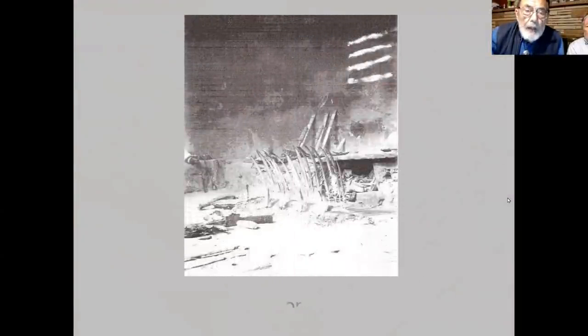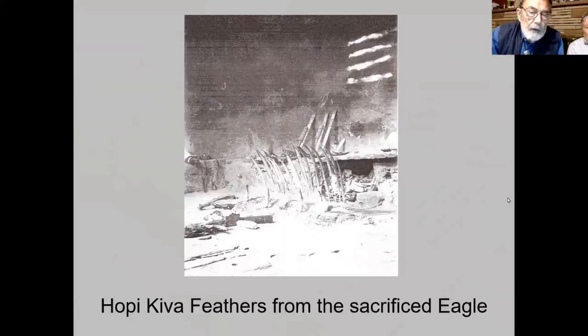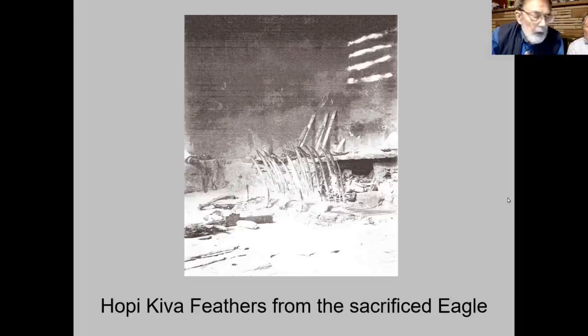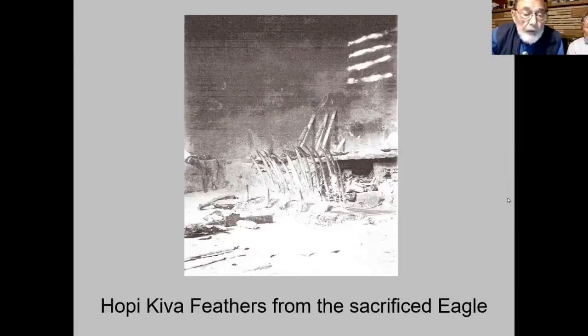The Hopis still capture young eagles from nests in spring, take them home, feed them, keep them in a pen on a pueblo roof — they virtually become pets. By the time the summer solstice Niman ceremony arrives toward the end of June, the animals are strangled, plucked, and their feathers are utilized in many different ceremonial and dress usages. This photograph is from inside a kiva, with light bars passing through the kiva ladder.